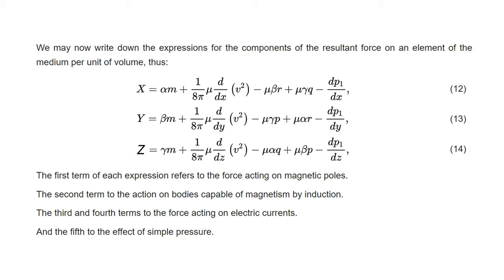We may now write down the expressions for the components of the resultant force on an element of the medium per unit volume: X = αm + (1/8π)μ · dV²/dx − μβr + μγq − dP₁/dx; Y = βm + (1/8π)μ · dV²/dy − μγp + μαr − dP₁/dy; Z = γm + (1/8π)μ · dV²/dz − μαq + μβp − dP₁/dz. The first term of each expression refers to the force acting on magnetic poles, the second term to the action on bodies capable of magnetism by induction, the third and fourth terms to the force acting on electric currents, and the fifth to the effect of simple pressure.